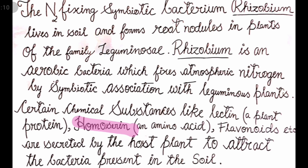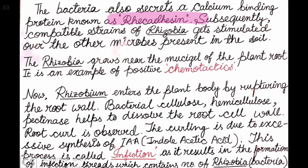The plant also produces flavonoids — such as luteolin, flavanone, etc. — which attract the bacteria. There is also a calcium-binding protein called Rekadesin. Rekadesin is a protein secreted by bacteria. After that, through interaction with other microbes, all of them are stimulated in the soil and Rhizobium begins growing toward the roots.